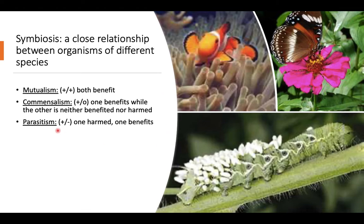Finally, parasitism means that one is harmed and one benefits. Here we see an example of a parasitic relationship: a caterpillar that has been invaded by wasp eggs. The wasp injects its eggs onto the caterpillar, and as the eggs grow, they feed on the fluids of the caterpillar. That's obviously not good for the caterpillar, but it's good for the eggs and larvae.